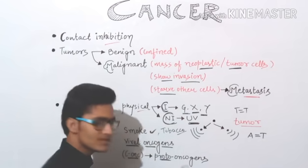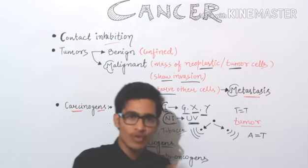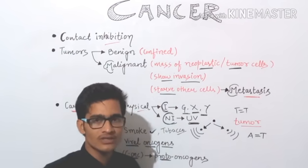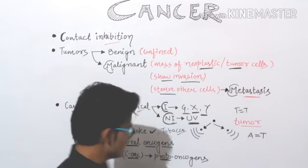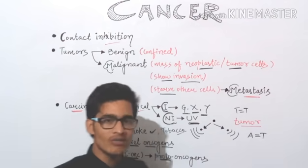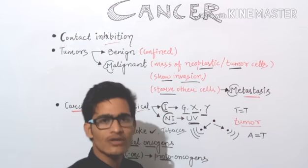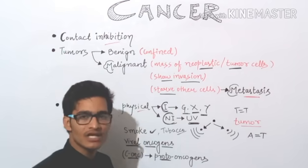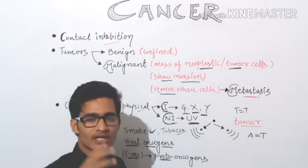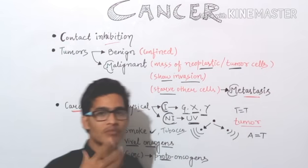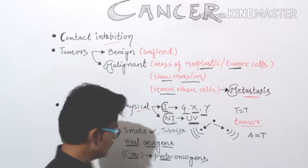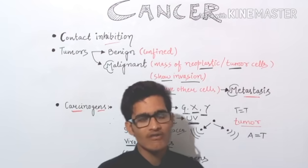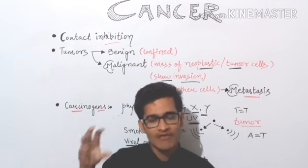Why are these known as proto-oncogens? Oncogen simply means cancer-generating cells, and 'proto' simply means they are in the pro-stage — they will further modify themselves to become an oncogen. Normal cells have proto-oncogens, but due to some kind of biological abnormalities, these cellular oncogens or proto-oncogens will get converted into cancerous cells, tumor cells, or neoplastic cells.